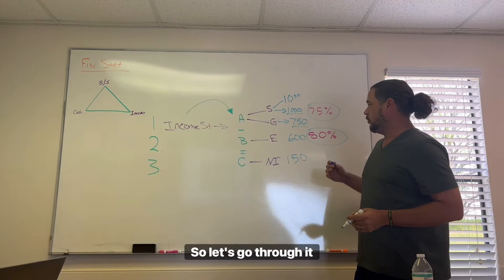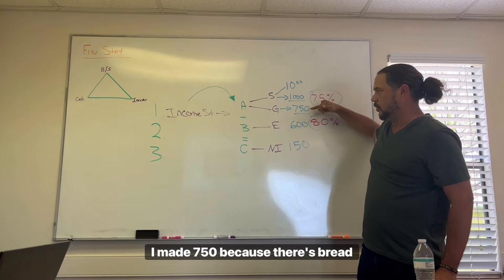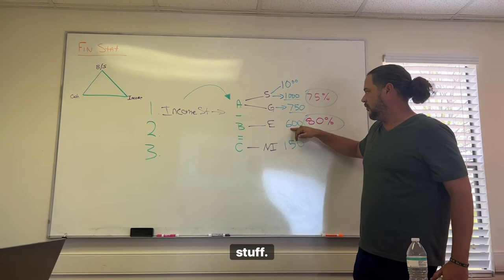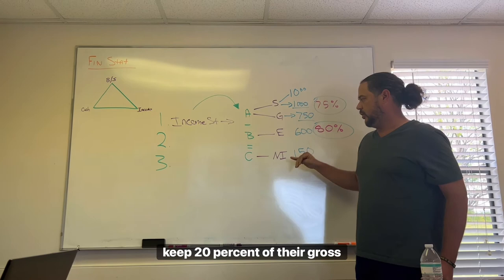So let's go through it again. I sold $1,000 worth of sandwiches. I made $750 because there's bread and cheese and meat, costs of goods sold. My cost of living as a business or my expenses is my rent, my utility, my payroll, all that stuff, which is usually about 80% of our gross. Good companies keep 20% of their gross profit as net income. So in this situation, we've kept $150.